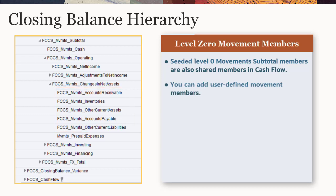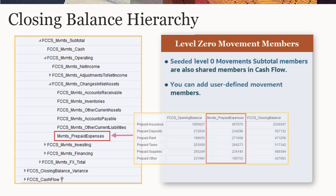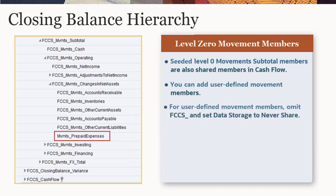You can add user-defined members to the Movement subtotal hierarchy as needed for your reporting purposes. For example, to include information on prepaid expenses in cash flow reports, you can add a MVMTS_prepaid expenses member under the Change in Net Assets parent. When you add user-defined members, you should omit the prefix FCCS_, which is reserved for seeded members. Data storage should be set to Never Share.